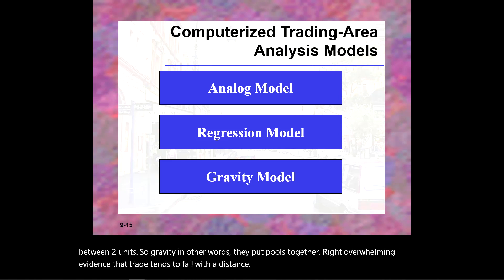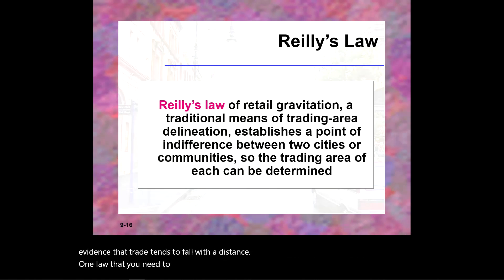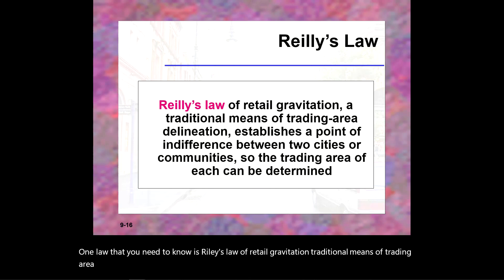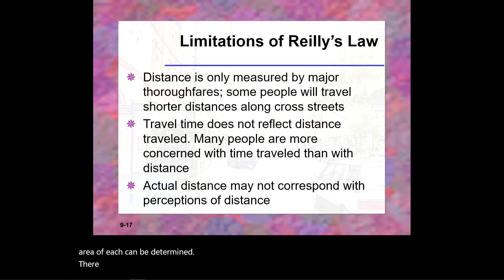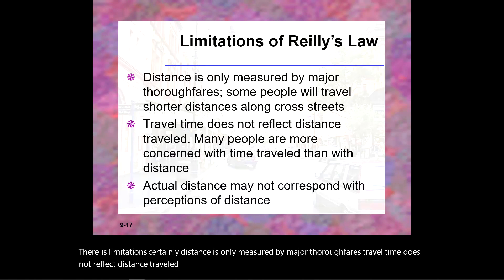One important concept is Riley's Law of Retail Gravitation, a traditional means of trading area delineation that establishes a point of indifference between two cities or communities so the trading area of each can be determined. Limitations include that distance is only measured by major thoroughfares, travel time does not always reflect actual distance traveled, and perceived distance may not correspond with actual distance.